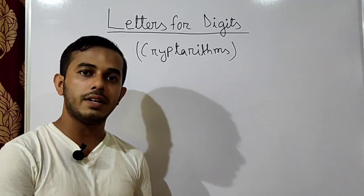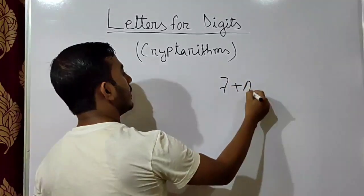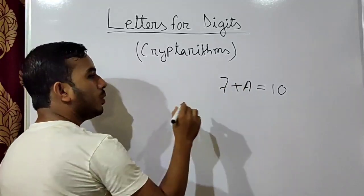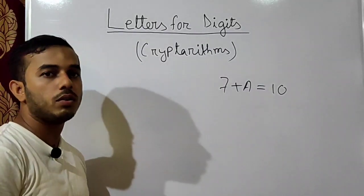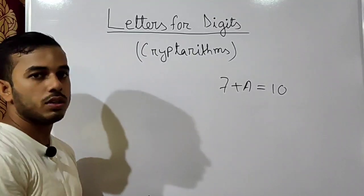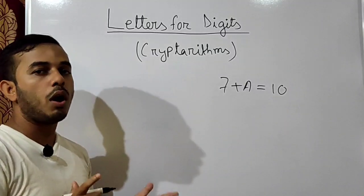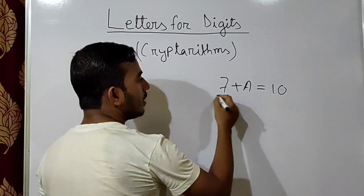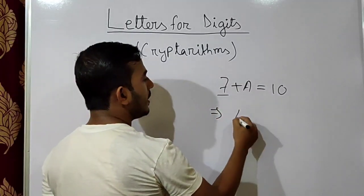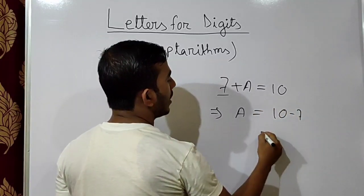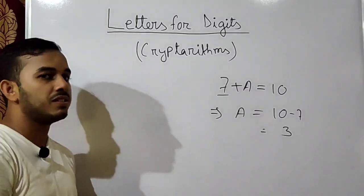In Letters for Digits, we will replace letters with digits. For example, if we take 7 plus A equals 10, with which number will we replace A to get result 10? We all know 7 plus 3 is 10, so we will replace A with 3. If we do not know this, we take 7 to the right-hand side and write A equals 10 minus 7, so 10 minus 7 is 3. So if we write 7 plus 3, we get 10. This is the basic concept.